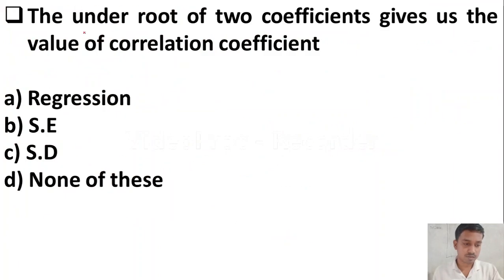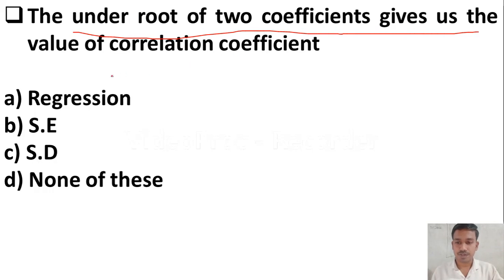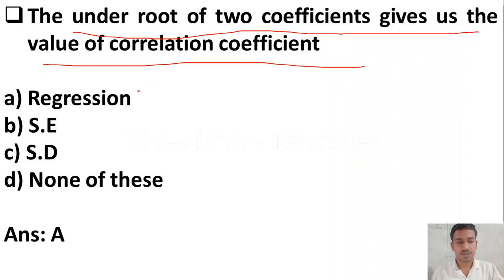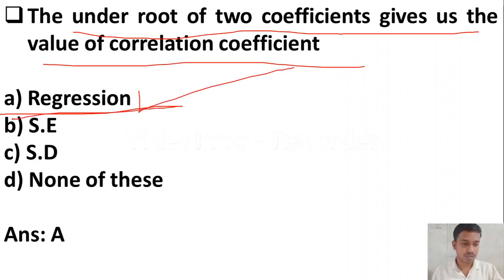The next question: the square root of the two coefficients gives us the value of the correlation coefficient. Option A regression, option B SE, option C standard deviation, option D none of the above. The square root of the two regression coefficients gives us the value of the correlation coefficient. So option A, regression, is the right answer.